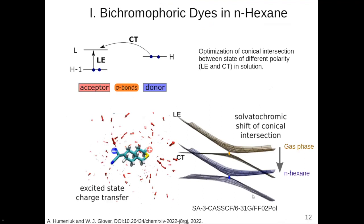We tested this on a set of bichromophoric dyes and showed that we can actually optimize conical intersections in solution, obtaining the crossing points and the expected stabilization of the charge transfer state.